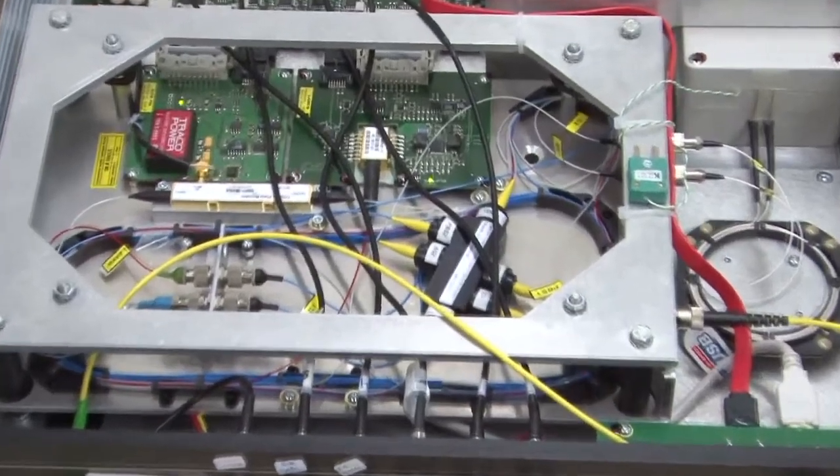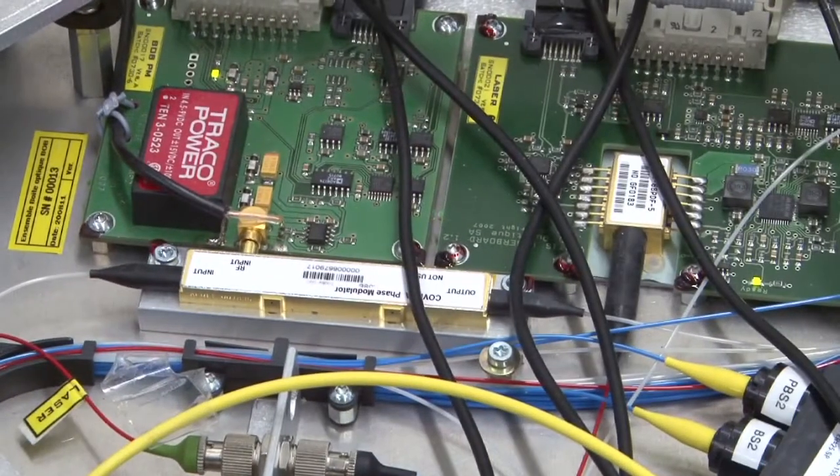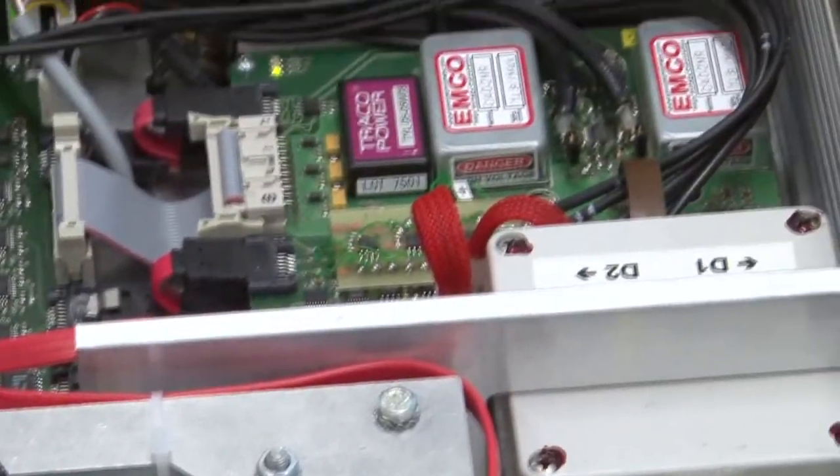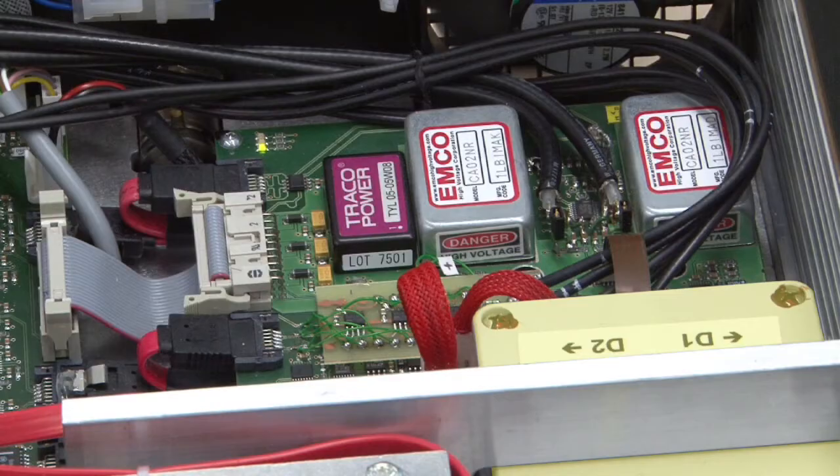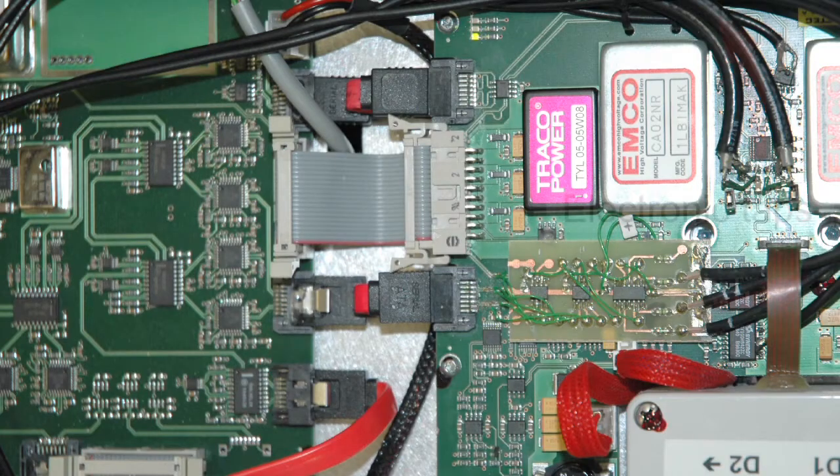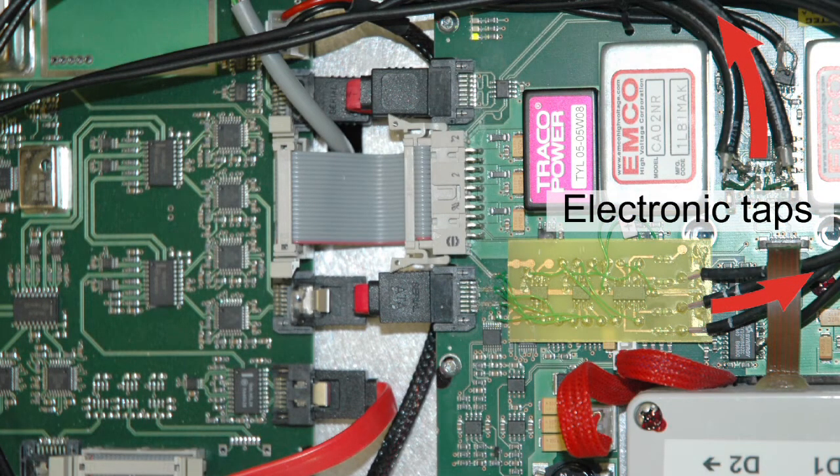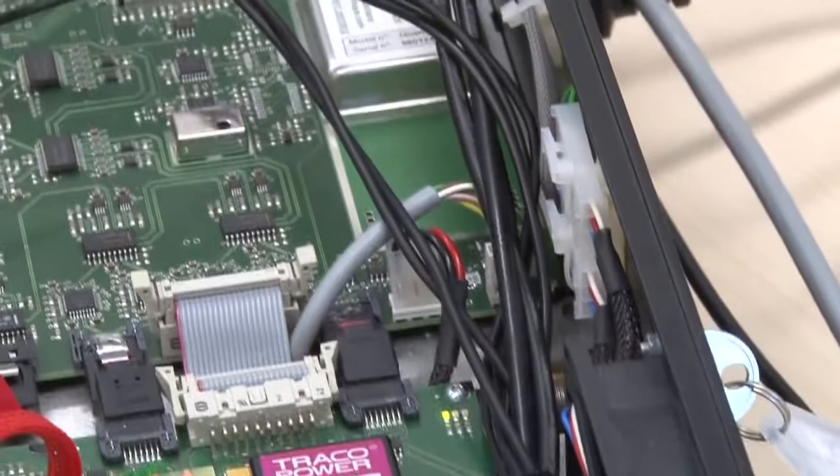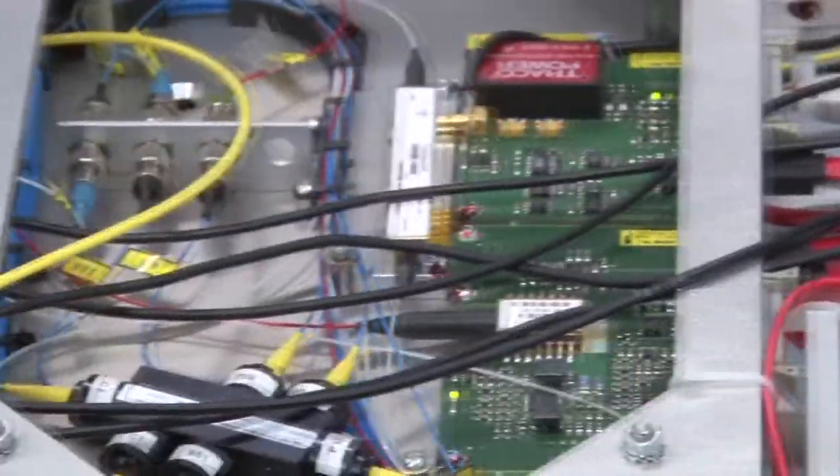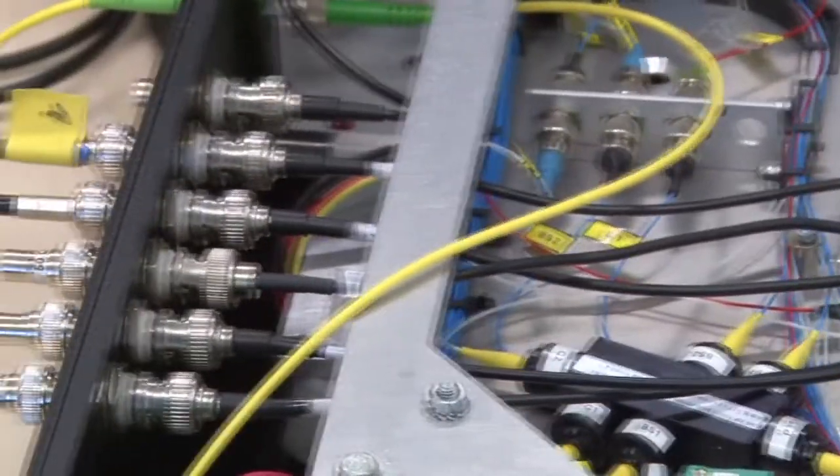Bob also has a phase modulator to perform the basis choice. The two detectors in Bob are avalanche photodiodes working in gated mode. Here we see also some additions made by us so as to get some information about various electronic signals in the module. In a real attack, the adversary of course cannot access such information, however, it enables us to verify that our attack really works.